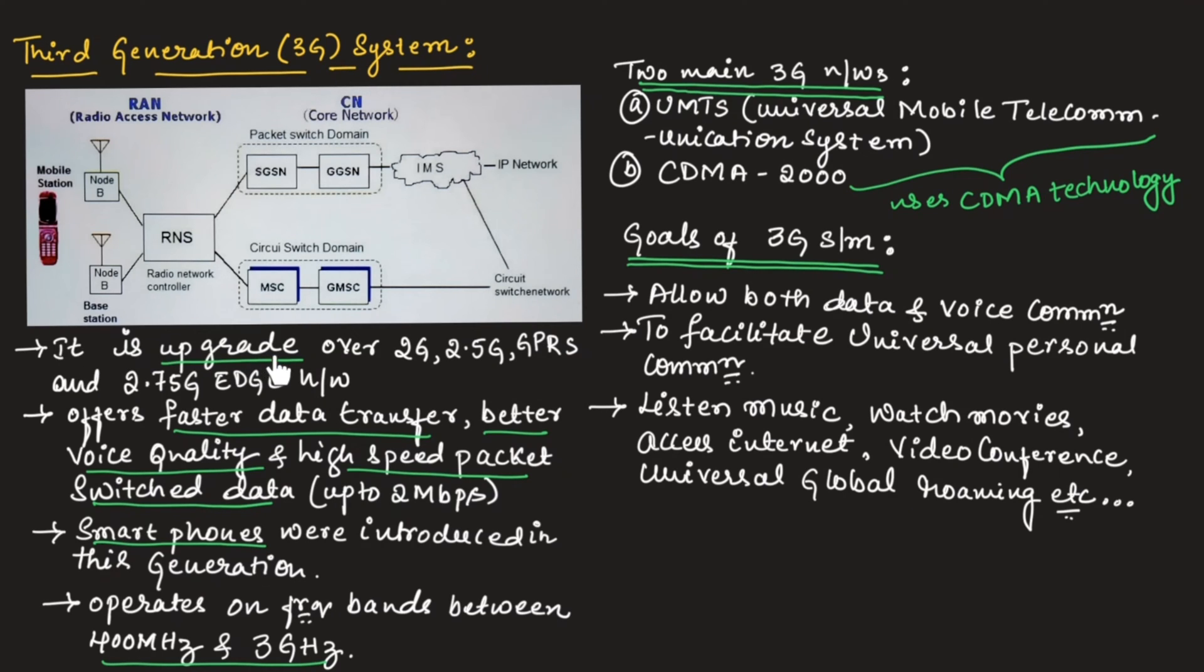Third generation system is upgrade over 2G, 2.5G GPRS and 2.75G edge network. These are the different families of second generation. It will offer fast data transfer, better voice quality, high speed packet switch data up to 2 Mbps, which is more compared to second generation system.